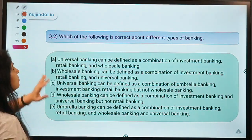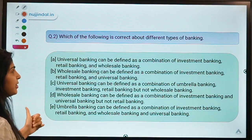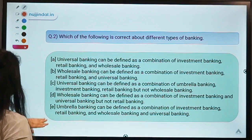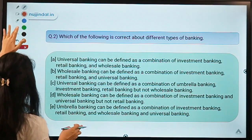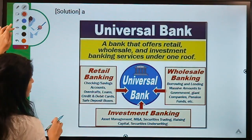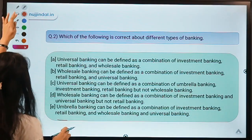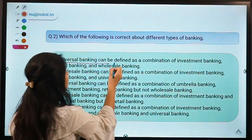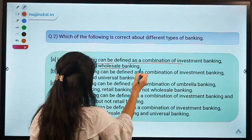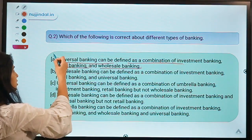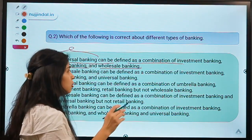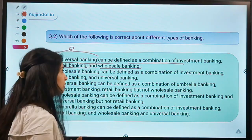Here is your second question: which of the following is correct about different types of banking? Different statements are given about different types of banking, and you have to select the correct option. The correct option for this question is option A, which means: universal banking can be defined as a combination of investment banking, retail banking, and wholesale banking. This universal banking term also came from your comments.